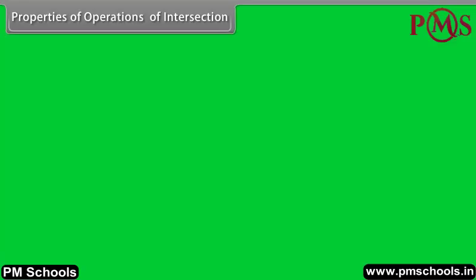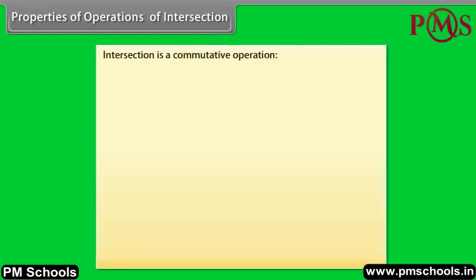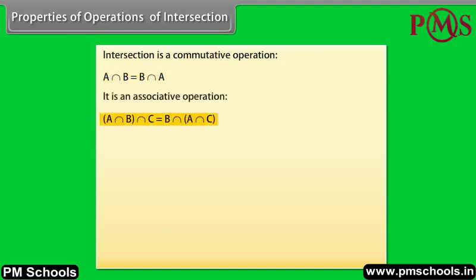Properties of operations of intersection. Intersection is a commutative operation: A intersection B is equal to B intersection A. It is also an associative operation: A intersection (B intersection C) is equal to (A intersection B) intersection C.